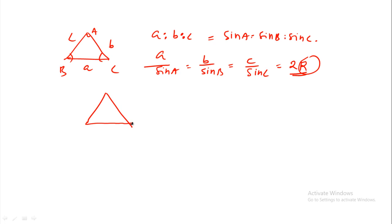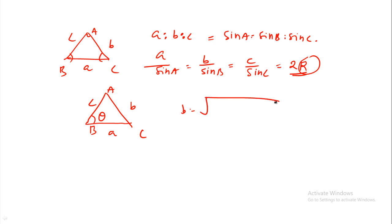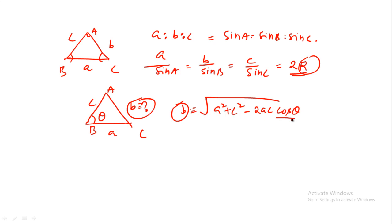Next, the cosine rule: given two sides a and c with included angle theta, the opposite side b equals the square root of a squared plus c squared minus 2ac cos theta.